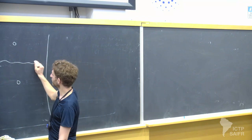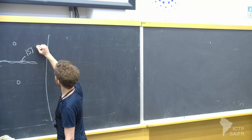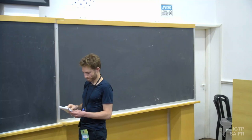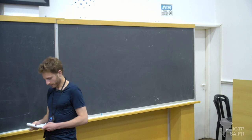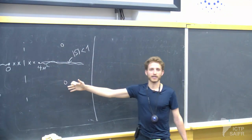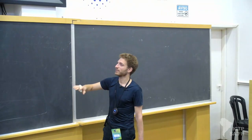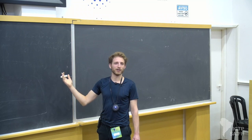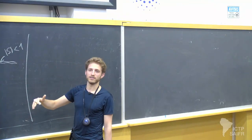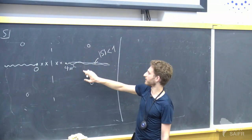Unitarity constrains the physical values of the S-matrix — the values right on top of this cut — to be less than or equal to one in absolute value. When we have a zero here, this corresponds to a pole on the second sheet, which you can easily see by changing to rapidity variables — S on the second sheet is just one over S of the first sheet. So when I have a zero here, I have a pole at the same location on the second sheet, meaning I have a resonance in my theory.